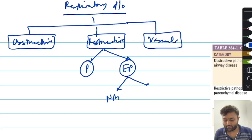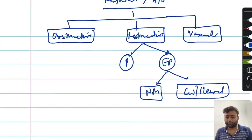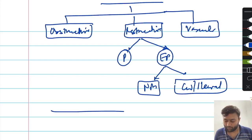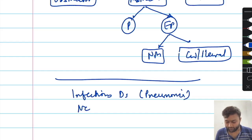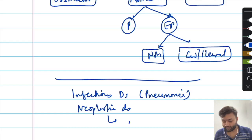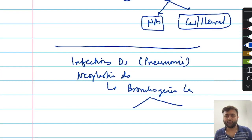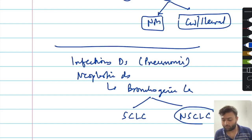Extraparenchymal disorders are further subdivided into either a neuromuscular type of illness or a chest wall and pleural illness. These are the basic categories of diseases in respiratory medicine. Apart from these, there are two other categories: infectious diseases, of which the most important is pneumonia, and neoplastic diseases which can be either primary or metastatic. Primary disease is referred to as bronchogenic carcinoma, which is divided into small cell lung carcinoma or non-small cell lung carcinoma.